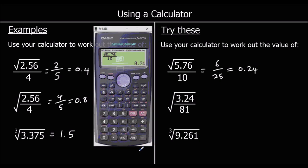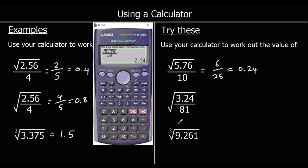For the second one, the whole of the fraction is in the square root. So square root first, then fraction, 3.24 on top, click down, over 81. So it's 1 fifth, or 0.2.